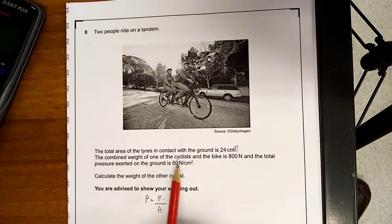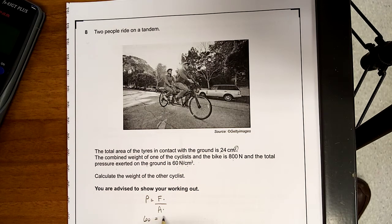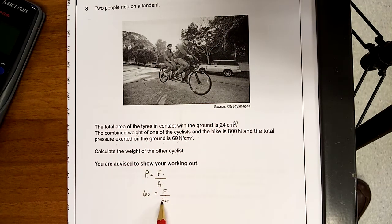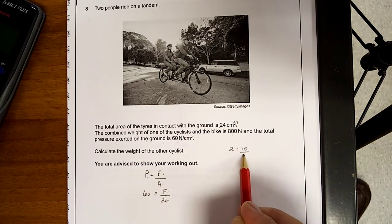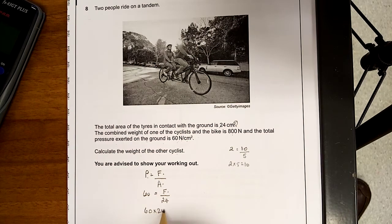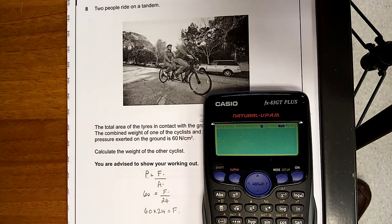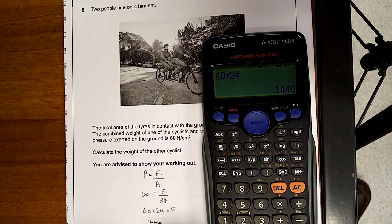Pressure equals force over area. So, the pressure is 60, and that's newtons per centimetre squared. So that's all right, is equal to the force over 24. So, I've seen what we've done. Pressure equals force over area. Now, don't be afraid to go to the stupidity. 60 times 24 is equal to the force. Turn it on after I learned from the last time. 60 times 24, 1440. 1440 is equal to the force.